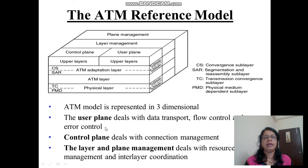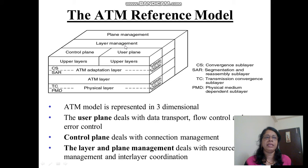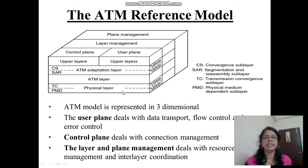This is the ATM reference model. It is represented in three dimensions: the user plane, the control plane, and plane and layer management. The user plane deals with data transport, flow control, and error control. The control plane deals with connection management. Layer and plane management deals with resource management and interlayer coordination. There are three layers: the physical layer, the ATM layer, and the ATM Adaptation Layer (AAL).